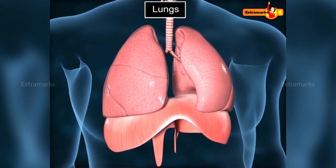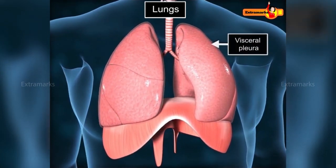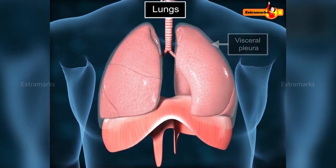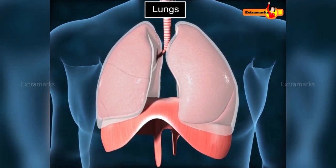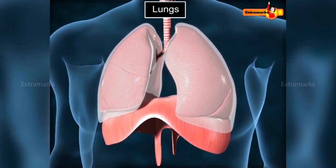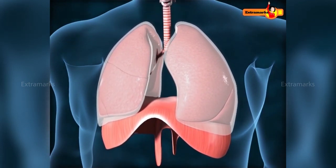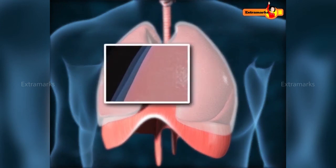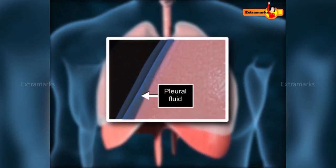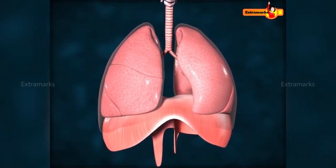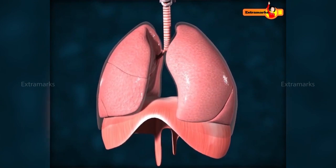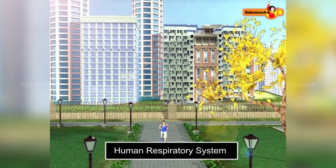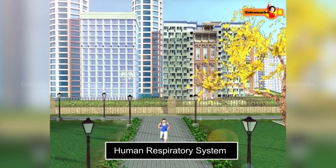Each lung is covered by two membranes: the visceral pleura on the inner side, tightly attached to the lung surface, and the parietal pleura on the outer side, lining the wall of the thorax and diaphragm. The pleural cavity is an airtight cavity filled with pleural fluid, which lubricates the pleura and reduces friction during expansion and contraction of the lungs. Together, the organs of the human respiratory system work in sync to supply sufficient oxygen for ongoing physical activity.